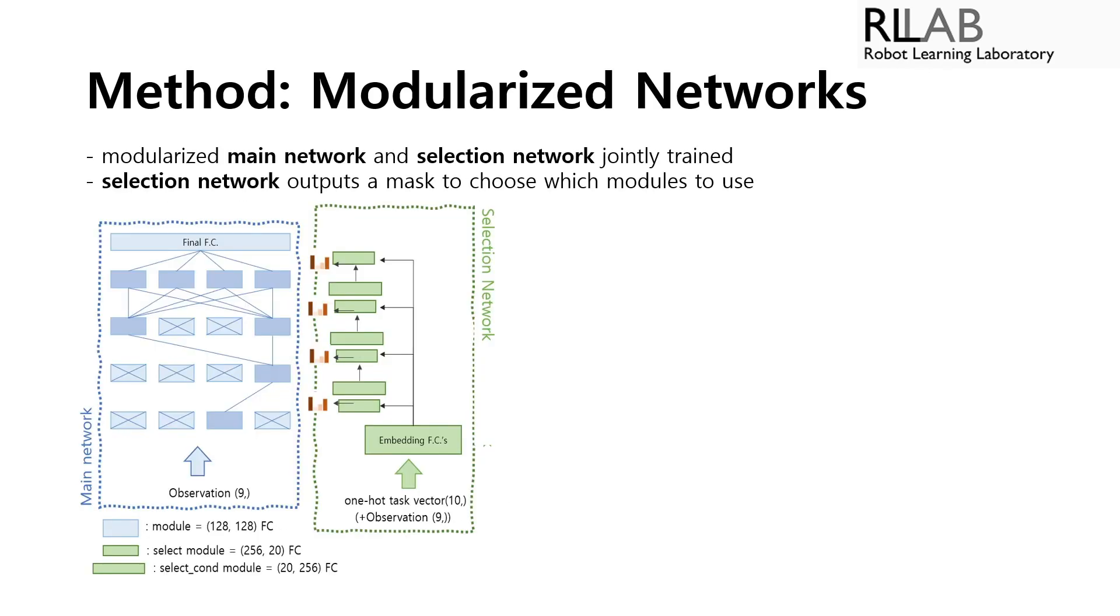So here's my method called hard modularization. We have broken down the agent's network, that is both the queue network and the policy network, into smaller blocks or modules. And we train a selection network which takes in task index and the observation to compute two things.